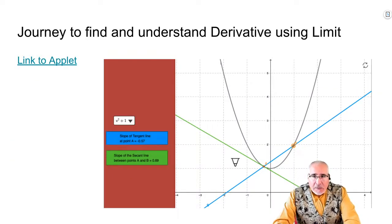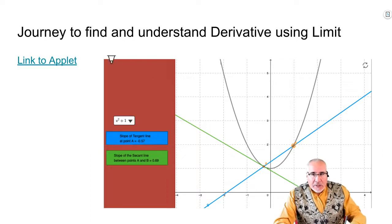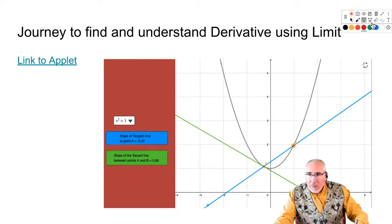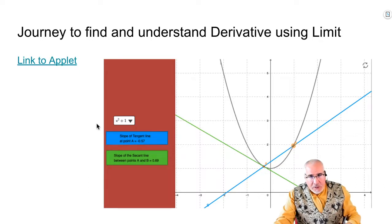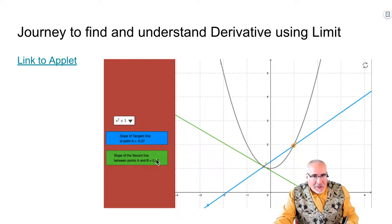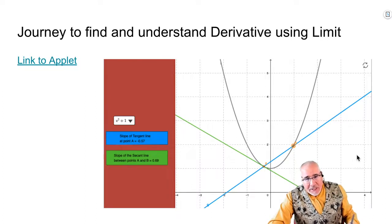So what we're going to do today is understand what a derivative is using limits, and we're going to take a look at this applet. Now one of the things I think is unfortunate is that the slope of the tangent line — notice the blue line is actually the secant line going through two points on this curve. The curve we're using is x squared plus 1. The blue line is actually the secant line, but they say the slope of the tangent line is in blue and the slope of the secant line is in green, so your mind has to switch here. But let's go ahead and go to the applet.